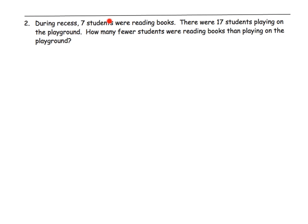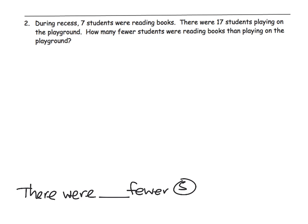Here it says: During recess, 7 students were reading books. There were 17 students playing on the playground. How many fewer students were reading books than playing on the playground? So the answer statement is: There were blank fewer students reading than playing. All right, there is my answer sentence.